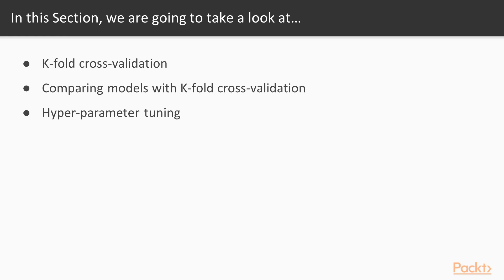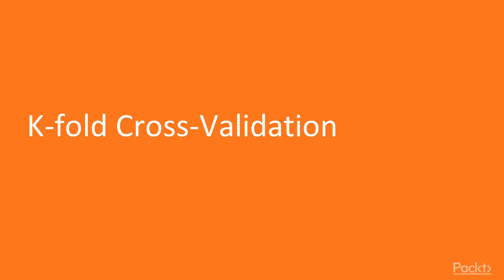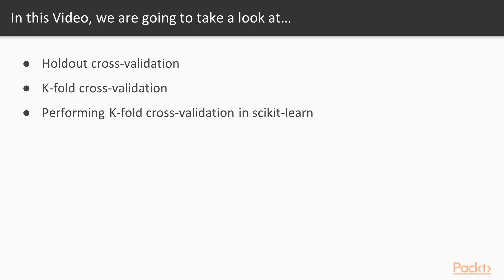Hyperparameter tuning is about choosing the best hyperparameters for our models. These techniques — k-fold cross-validation and hyperparameter tuning — are really crucial for building great predictive analytics models. The plan for this video is: first, we will review the holdout cross-validation method, then we will talk about k-fold cross-validation, and we will finish by performing a k-fold cross-validation example in scikit-learn.